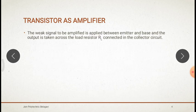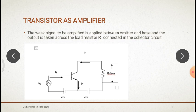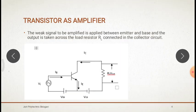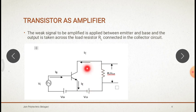Now let's see how the transistor acts as an amplifier. Looking at the circuit diagram: the base, emitter, and collector are shown. The input is connected at the base-emitter side, and on the collector side we have connected a load resistor for the output. VBB makes the emitter-base junction forward biased, and VCB makes the collector-base junction reverse biased. The input signal is applied between the emitter and base, and the output is taken across the load resistor RL.